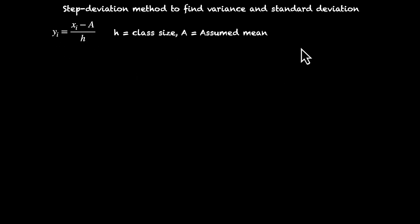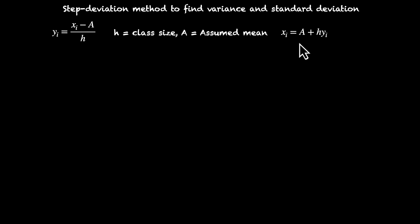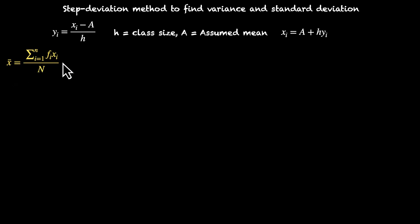This means if we rearrange this, we'll get xi as yi times h plus a, or a plus h·yi. So if we have this, what do we have for mean? x̄ or mean is equal to Σ(fi·xi) / n — the sum of the product of fi·xi divided by the total number of frequencies.